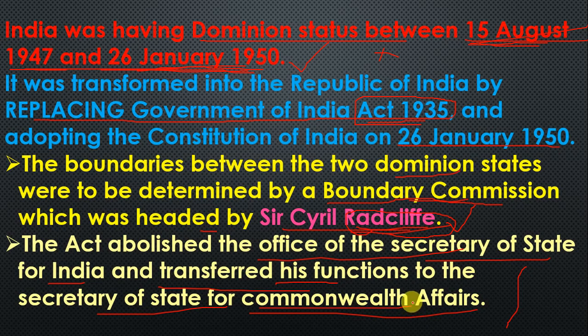The Secretary of State for India was a very important office. The Secretary of State controlled the Viceroy, and the Viceroy controlled the Governor General, who governed India. So the chain was: Prime Minister → Secretary of State → Governor General → Governor of India.